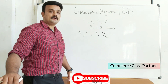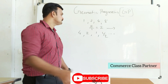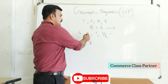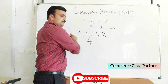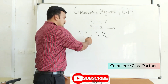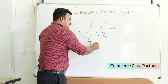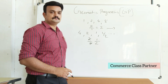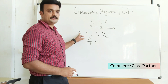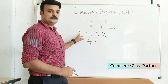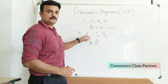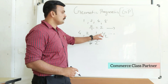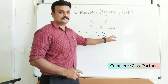Here, what is the common ratio? It is 2 divided by 4, which equals 1/2. So each term is the previous term multiplied by 1/2: 4 × 1/2 = 2, 2 × 1/2 = 1, 1 × 1/2 = 1/2, and so on.